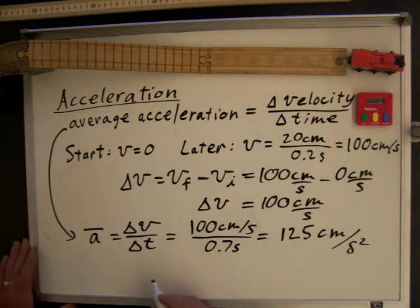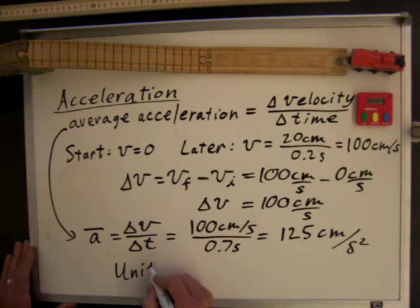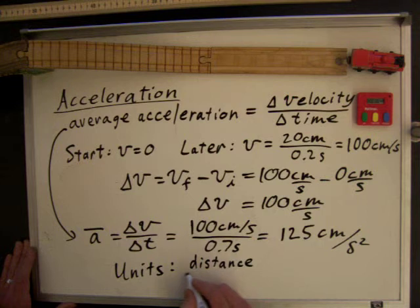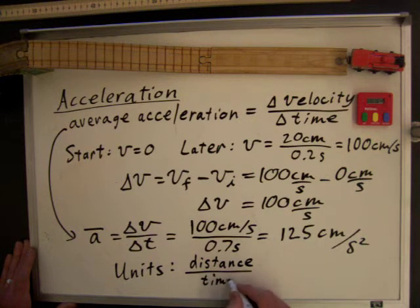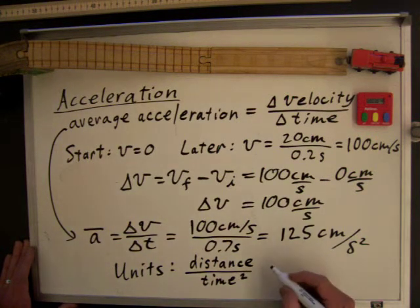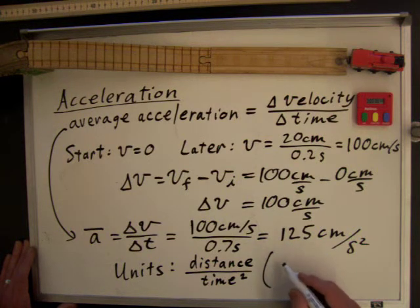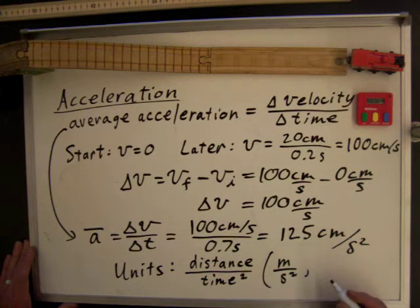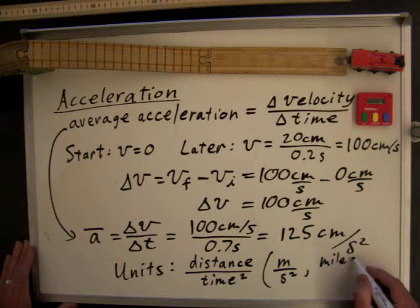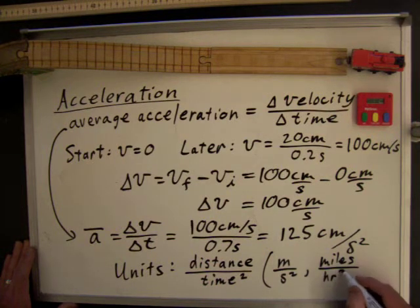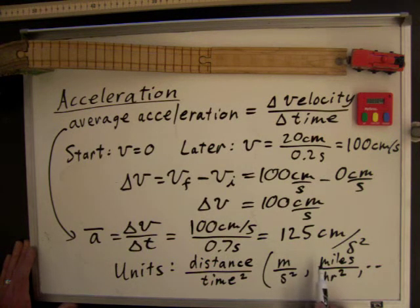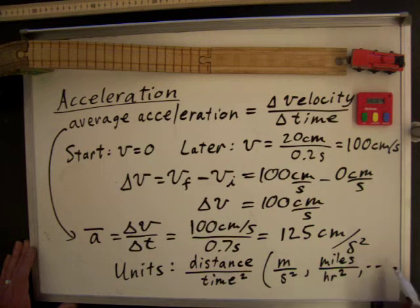Whenever you have an acceleration, the units are always going to be distance over time squared. So, for example, you could have an acceleration which had units of meters per second squared. That would be SI units. You could also have miles per hour squared. You could have lots of different units. Anytime you have a unit which is distance over time squared, then that could be an acceleration. Those are all valid units for acceleration.